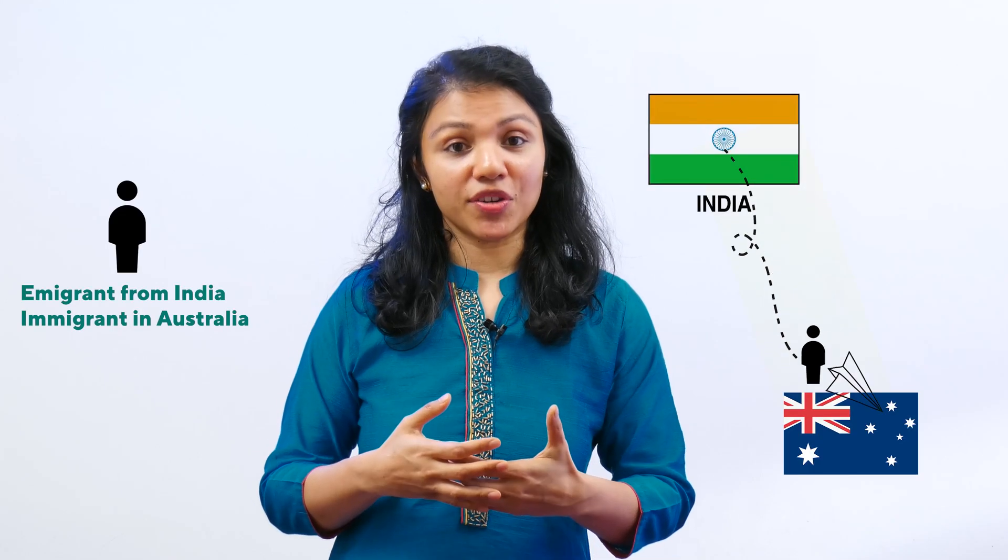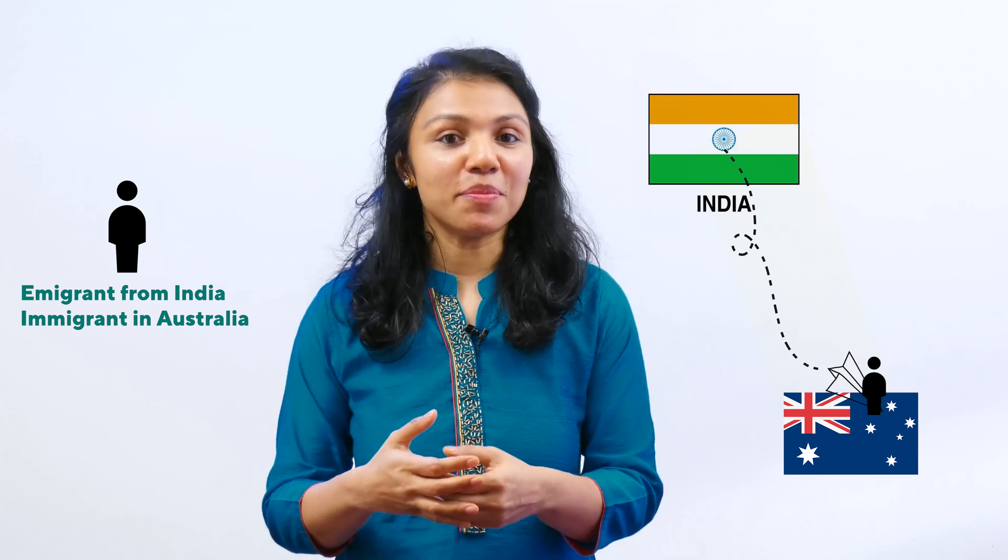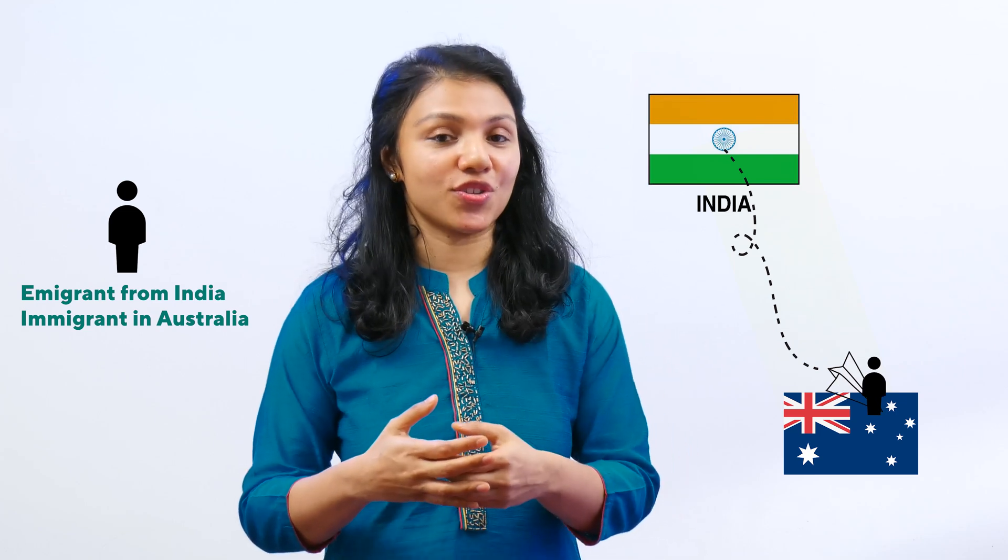Migration can happen across countries or across regions within a country. If a person migrates from one country to another, it's called immigration. For example, if somebody moves from India to Australia, that person is an emigrant from India and an immigrant in Australia.